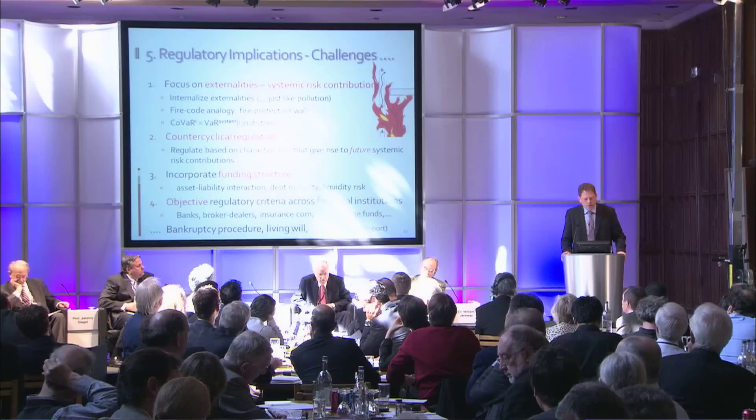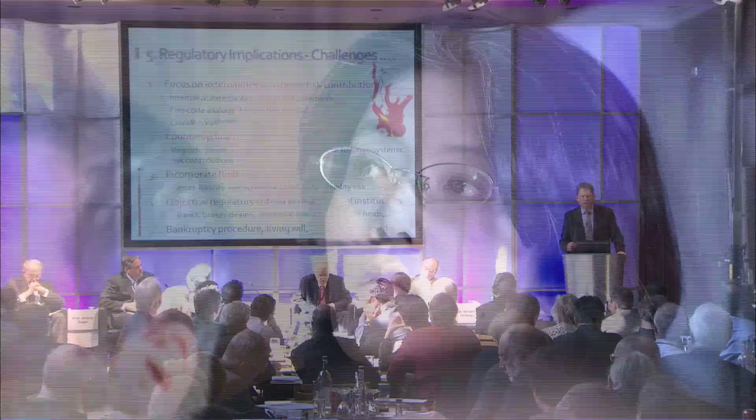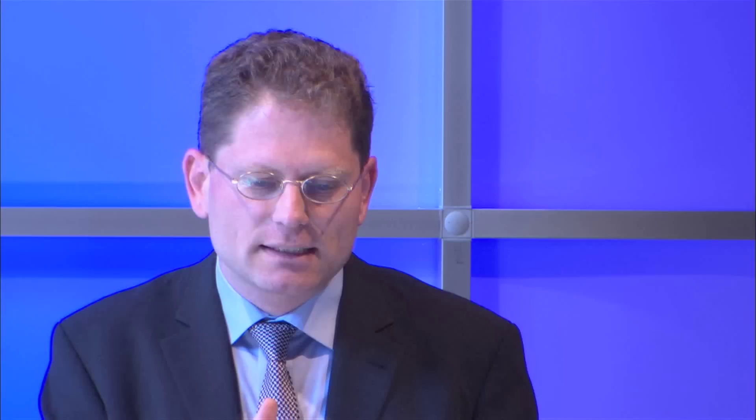What are the challenges for the regulatory framework? First, there should be a counter-cyclical element. Second, we should focus on where the market failure is — there's a huge externality problem, and we have to internalize this externality. We have to impose some Pigouvian tax or equivalent to internalize this externality, like what we do with pollution. A nice analogy is the fire code: the house owner has an incentive to make sure his house doesn't catch fire, but little incentive to prevent the fire he causes from spreading to his neighbor and then to the whole town. There is a regulatory necessity to have fire protection laws.